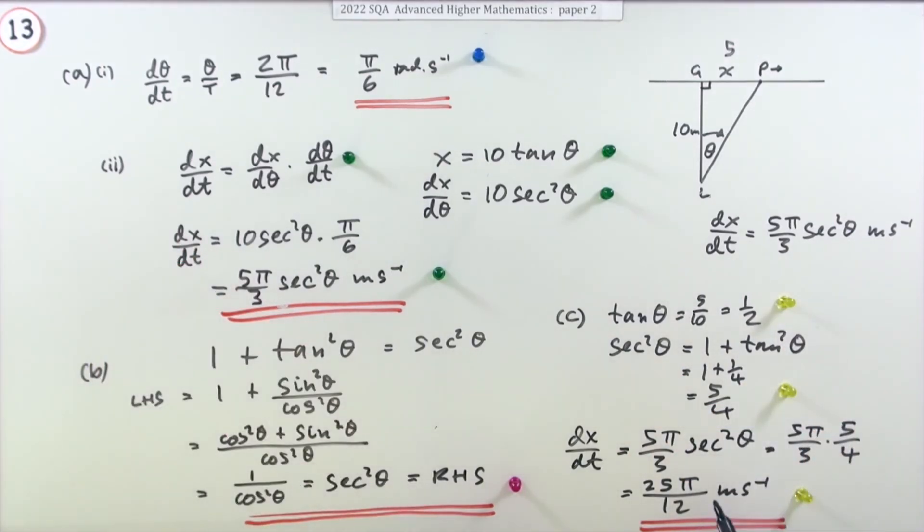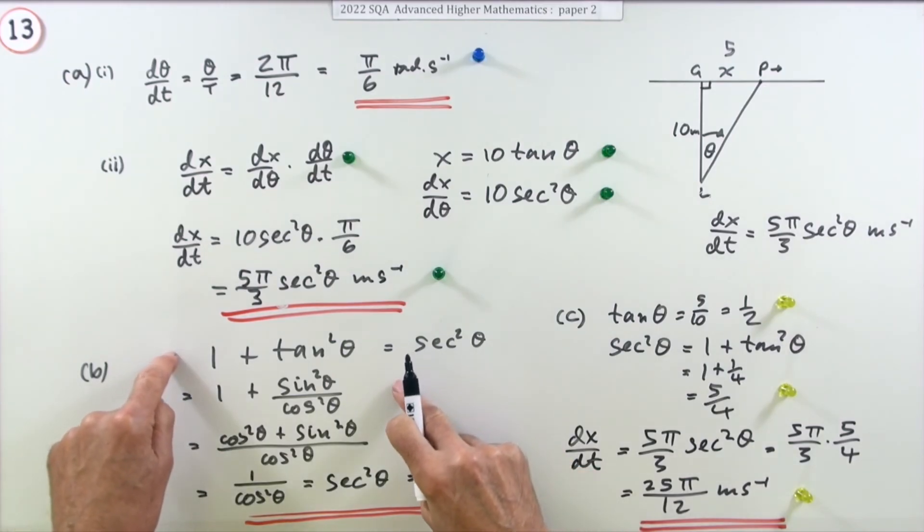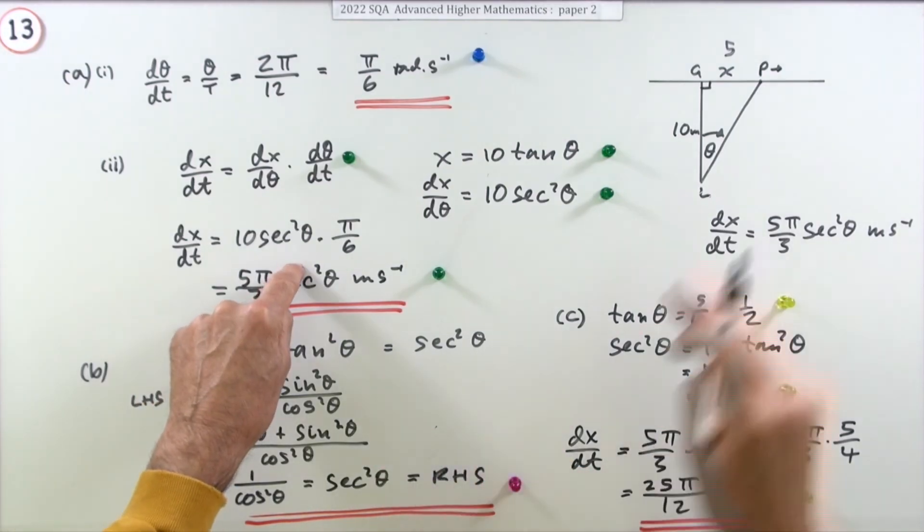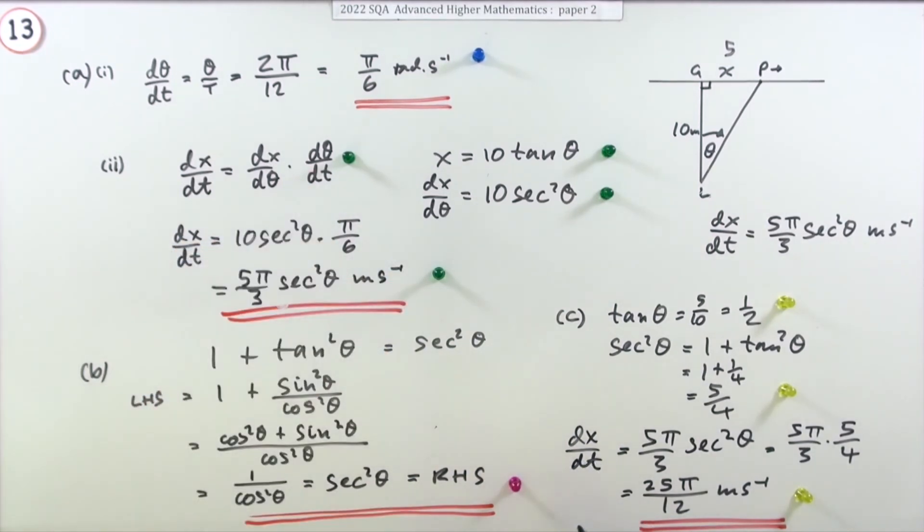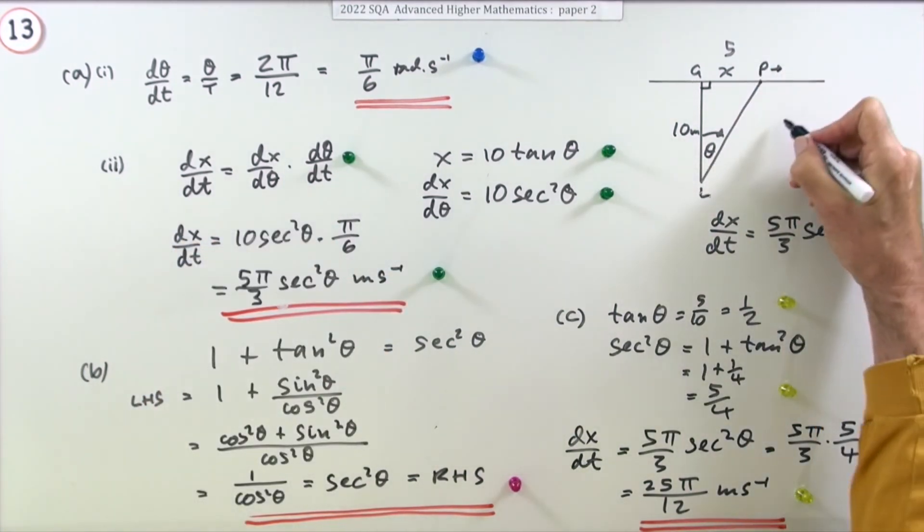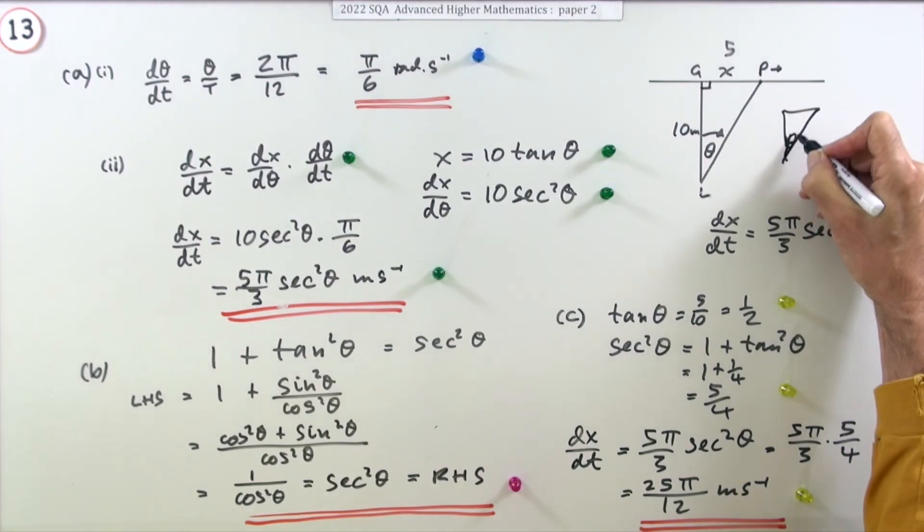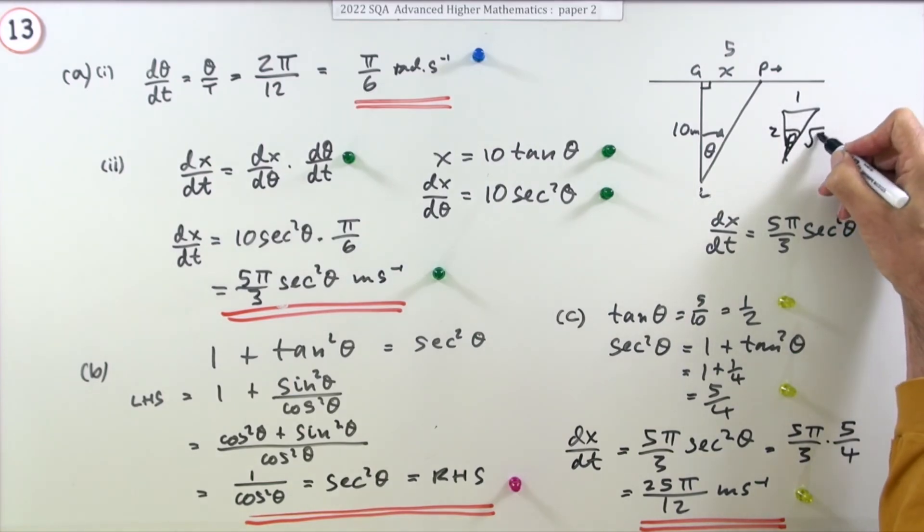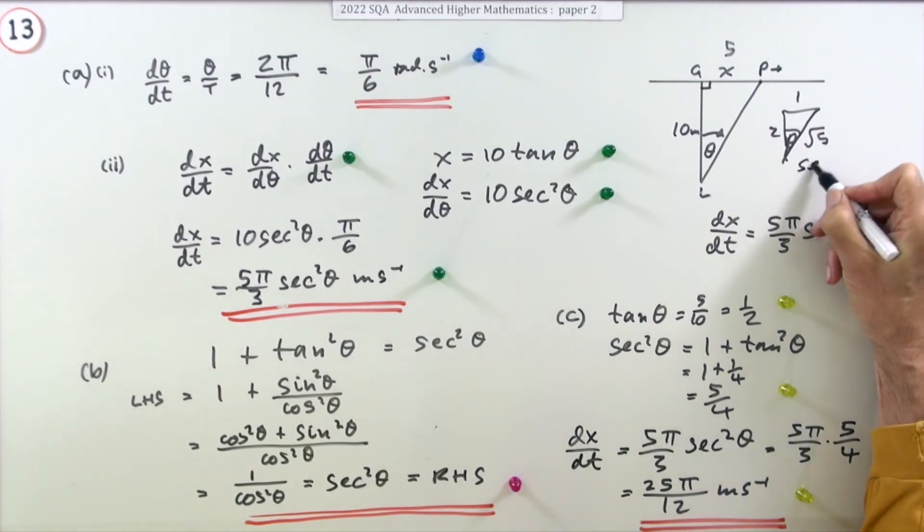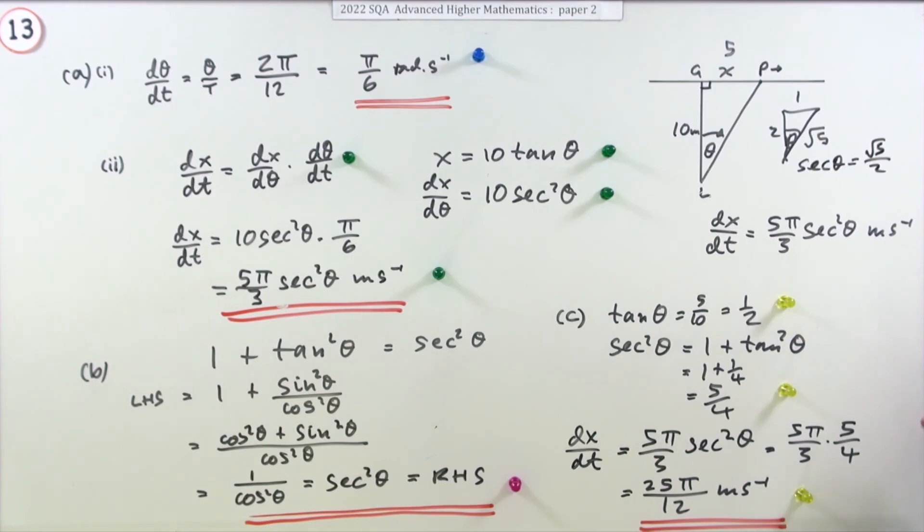Of course, alternatively, you could have got to that without needing to use this connection, because you could have got sec straight from that diagram. Sec is the inverse of cos. Now, in that diagram there, I'll just simplify this little triangle here. There's θ, it's not very well written. The ratio is 1, 2, so using Pythagoras, that makes that root 5. Now, the cosine would be adjacent side 2 over root 5, so that means that the sec is going to be root 5 upon 2, in which case sec² would be 5 upon 4, and then you would just proceed as before.